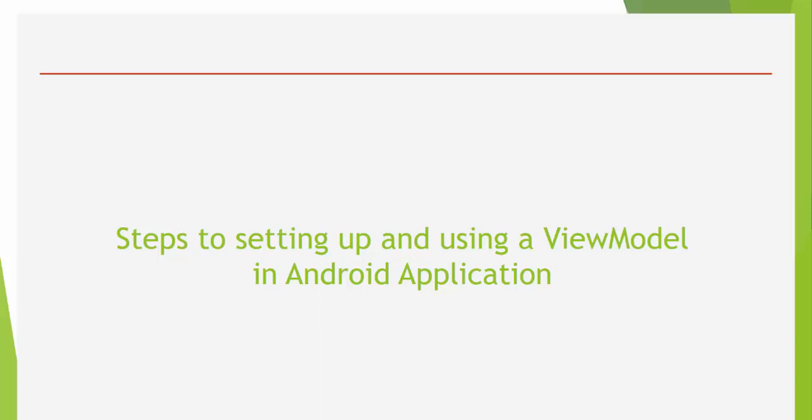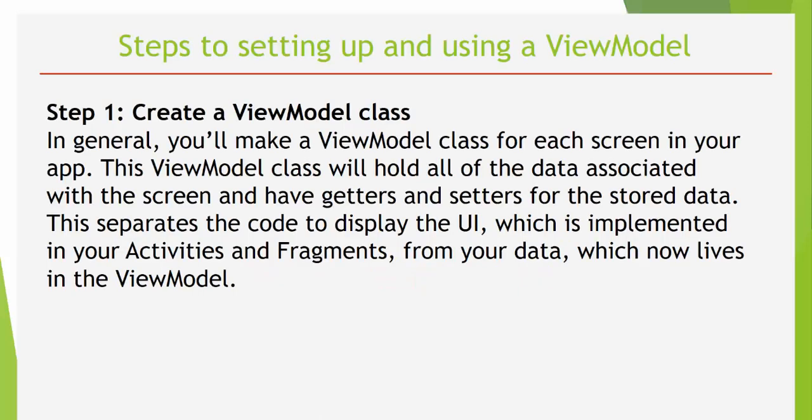Steps to setting up and using the ViewModel in an Android application. Today we are going to talk about the main steps and then introduce them in the tutorial application about tracing a basketball score game. Step number one: create a ViewModel class. In general, you will make a ViewModel class for each screen in your app. This ViewModel class will extend ViewModel and will hold all of the data associated with the screen and have getters and setters for the stored data. This separates the code to display the UI, implemented in your activities and fragments, from your data, which now lives in the ViewModel.